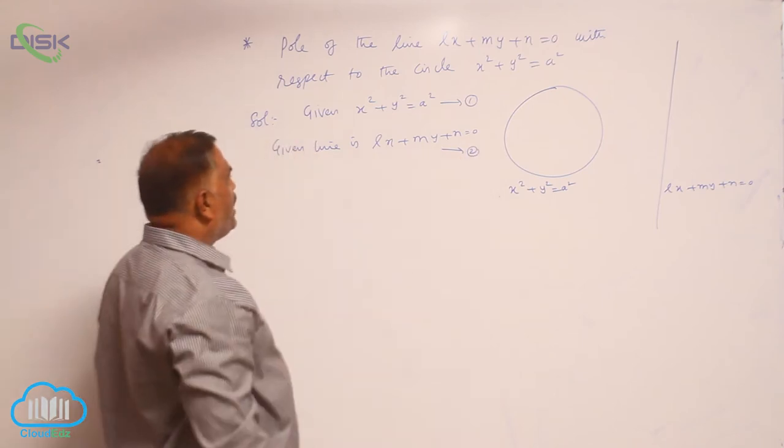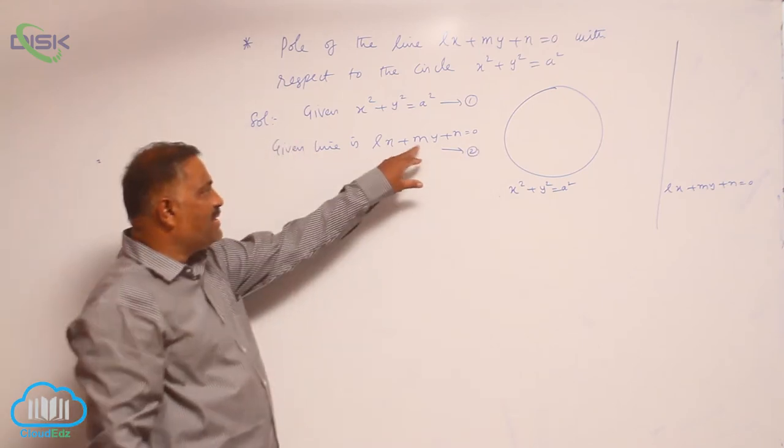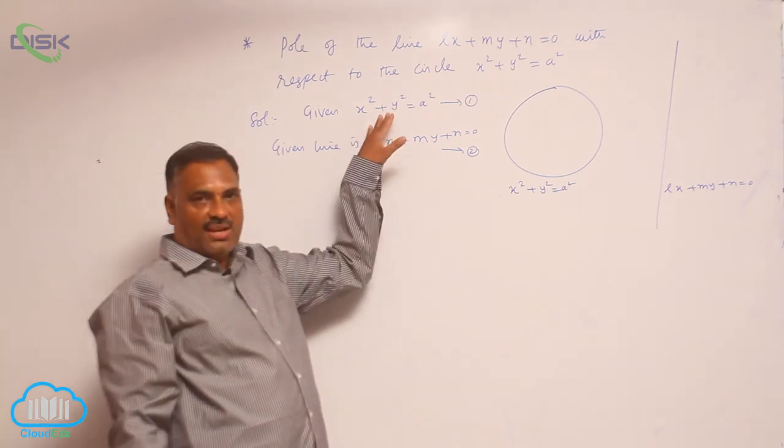Now, we need to find out the pole of Lx + my + n = 0 with respect to the circle.